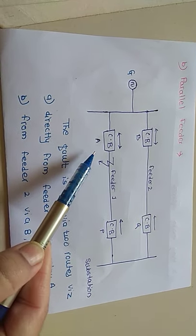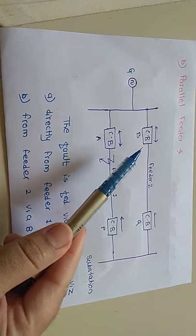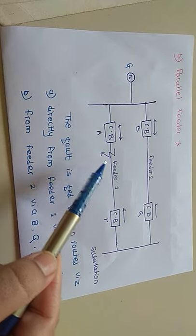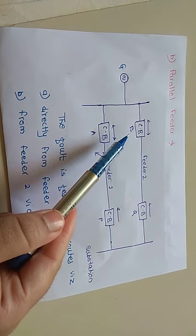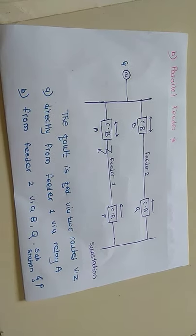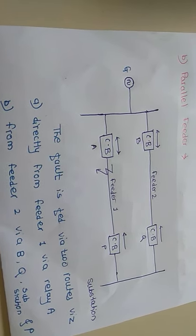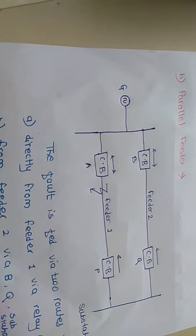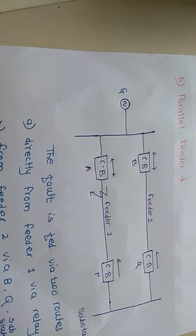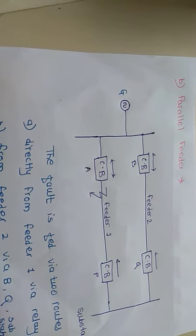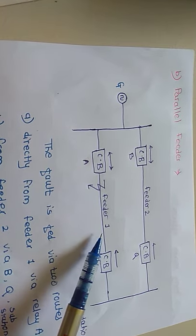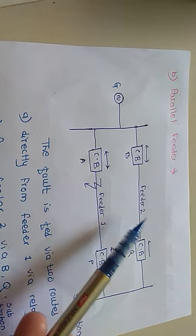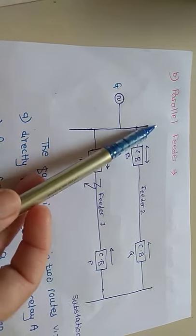Relay A will operate while relay B will become inoperative, because the fault occurs on feeder 1. This happens because the relay has inverse time-current characteristics and the current flowing in relay A is in excess of that in relay B. In this way, the faulty feeder is isolated. Hence, when a fault occurs on feeder 1, the continuity of supply will be maintained by feeder 2. This is the advantage of the parallel feeder.